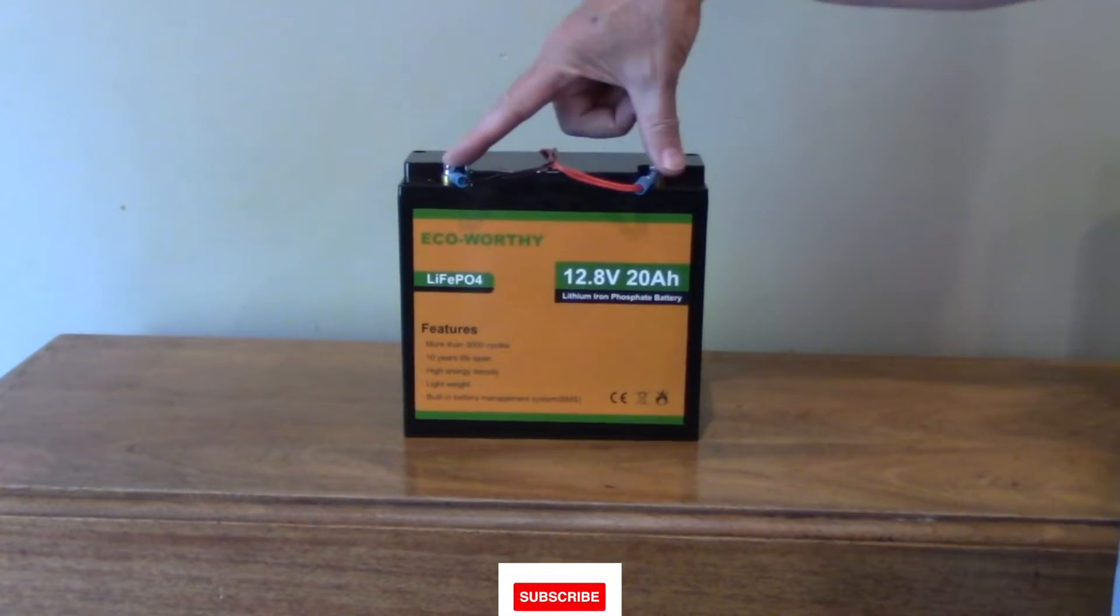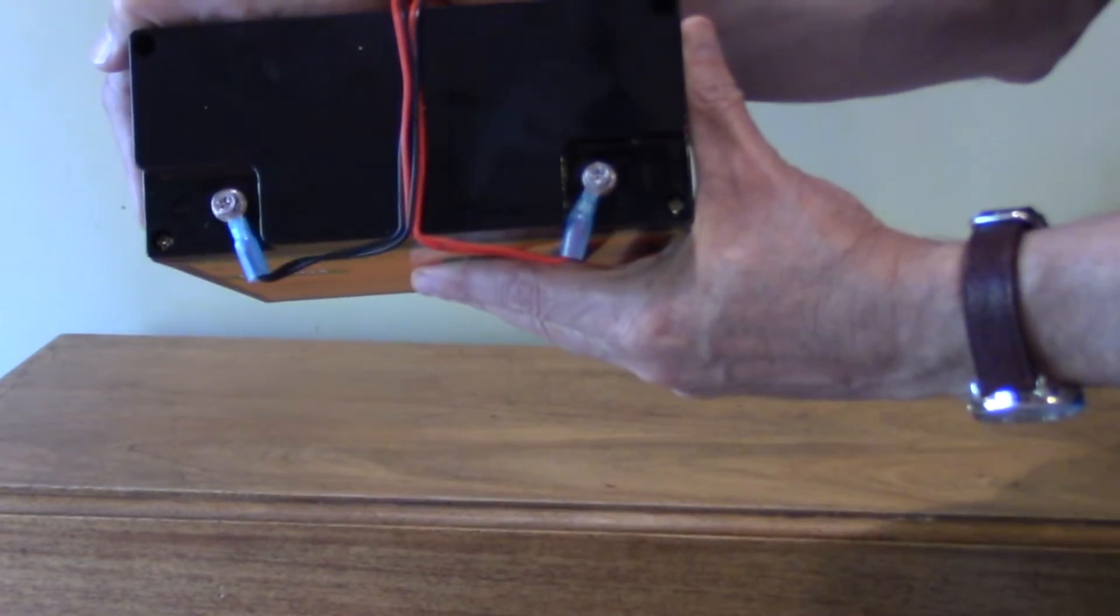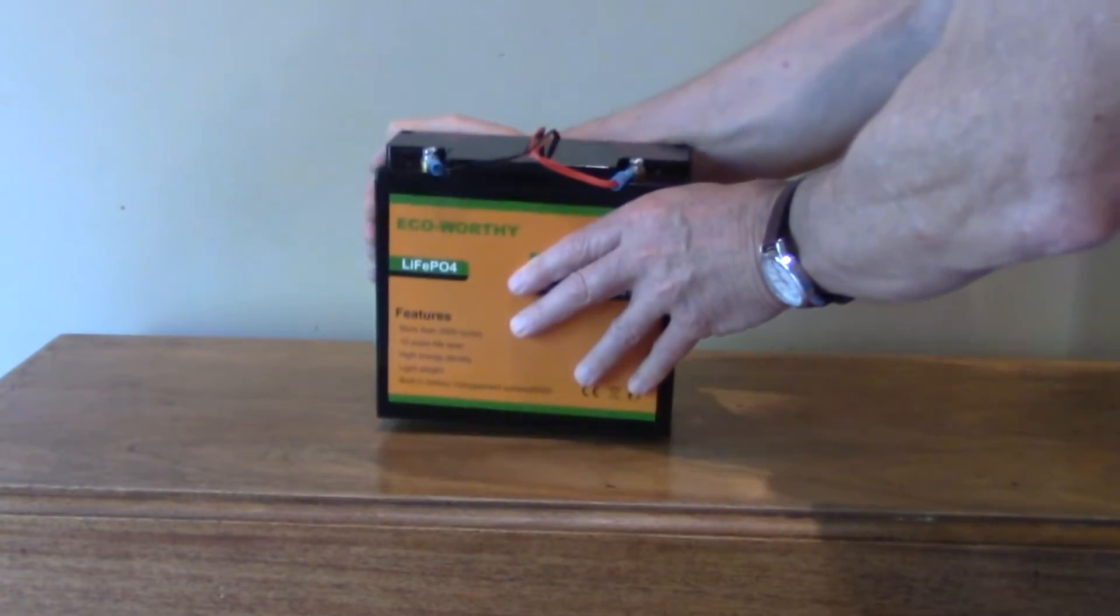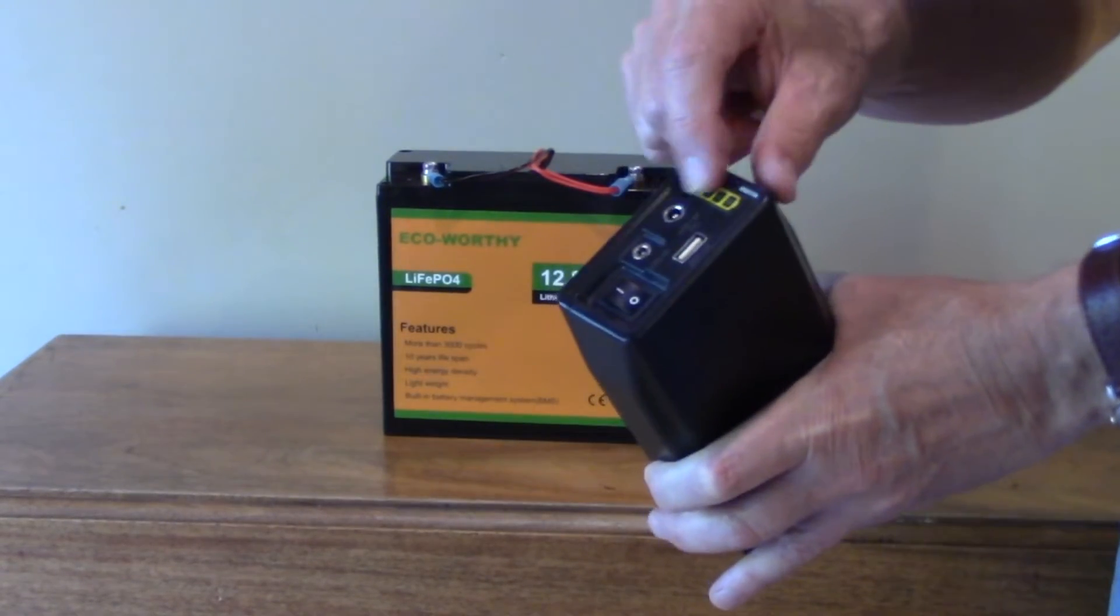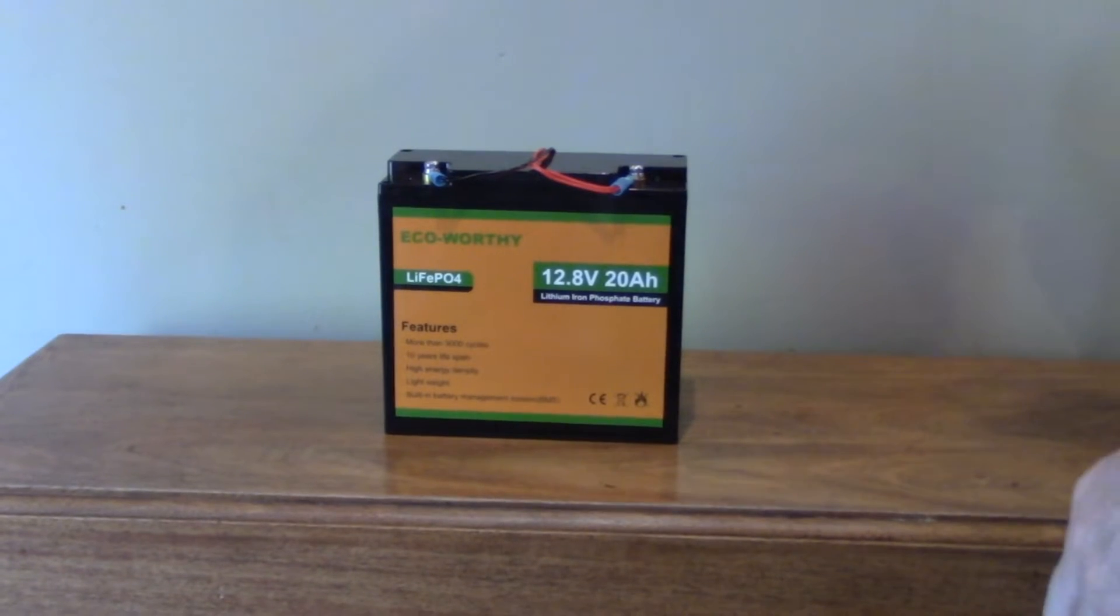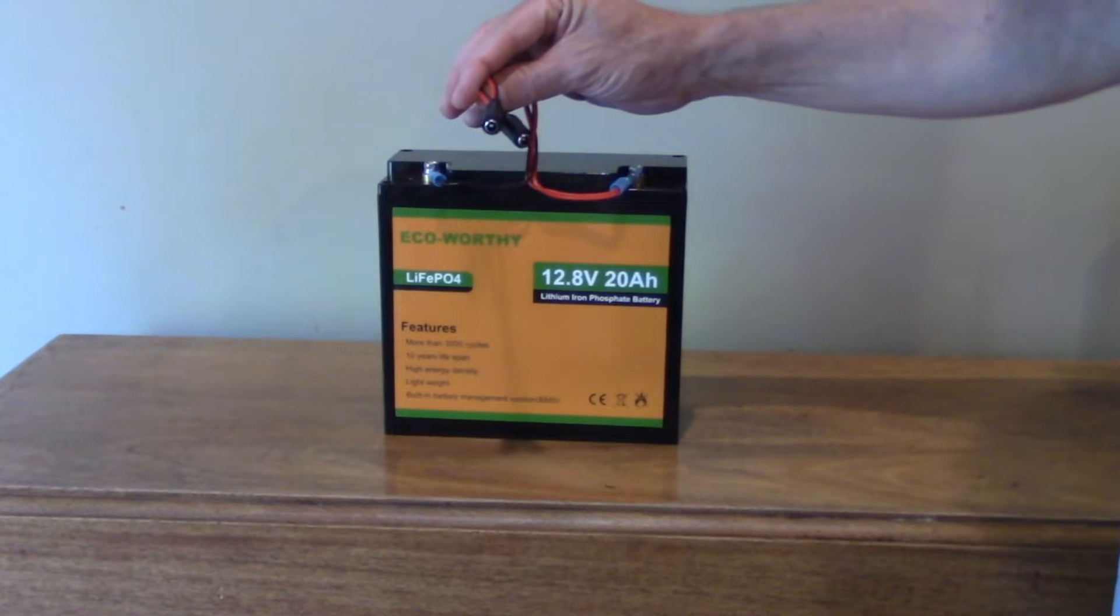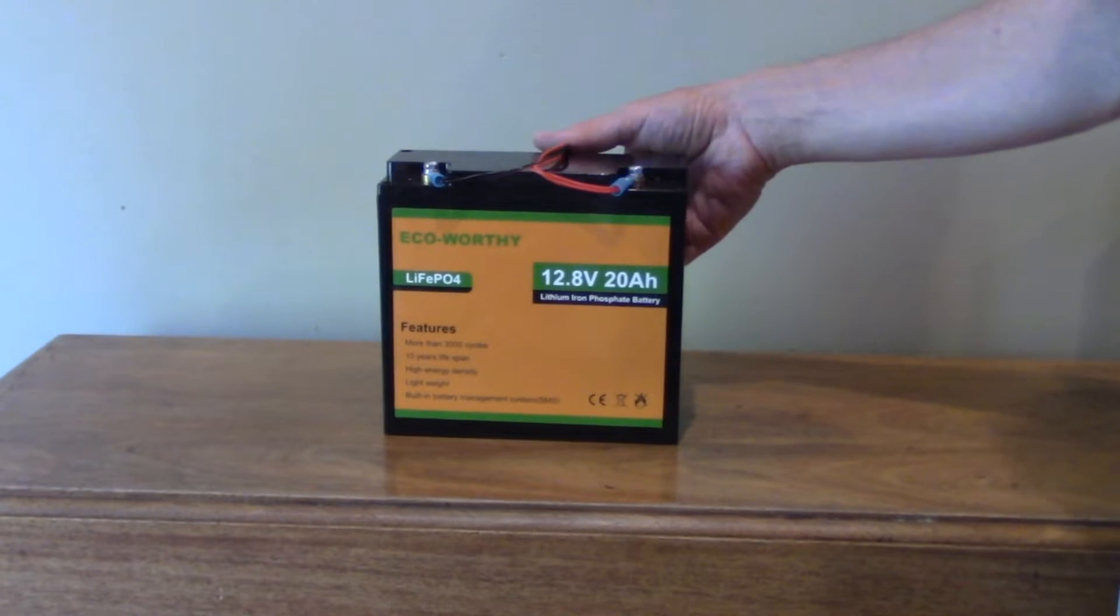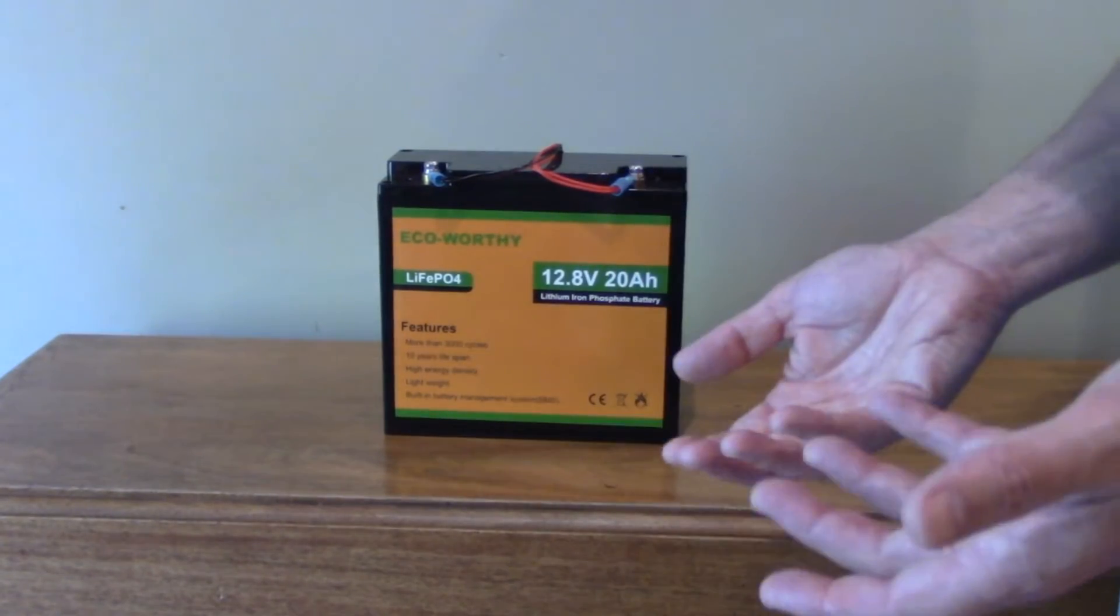They have screw mounts on top. These are, I believe, M5. And unlike a battery bank, there's no switch or meter or USB ports or anything like that. But that's really no problem at all. What I've done here is I've added a couple of 12-volt female input jacks.